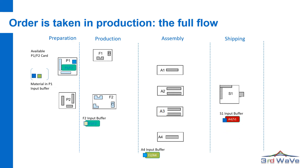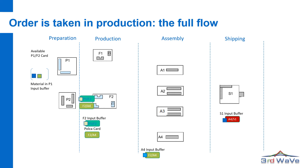When the job in cell P1 is finished, the resulting product is moved to cell F2 together with the Polka card. When the material and the Polka card are available, the job can be started in cell F2 and both Polka cards are now attached to the job.